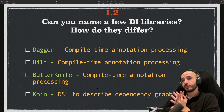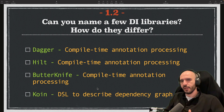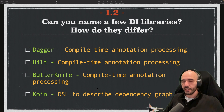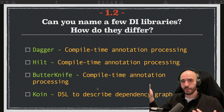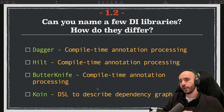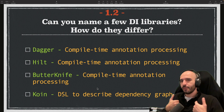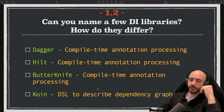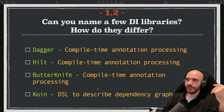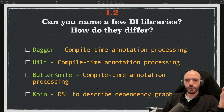Dagger, Hilt, and Butter Knife are compile-time based — before you compile, it checks if your dependency graph is fully satisfied, so you don't see runtime errors. Koin uses a DSL to describe the dependency graph yourself; it's not built using compile-time annotations. That's the key difference. Personally I use Hilt because of the power of Dagger, and Hilt makes Dagger easier to use.